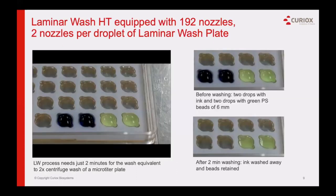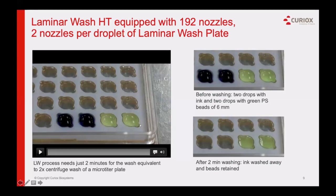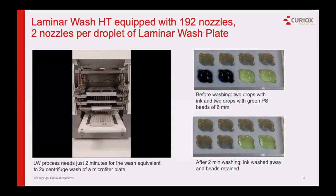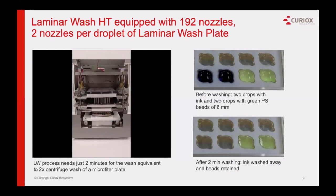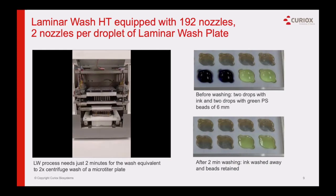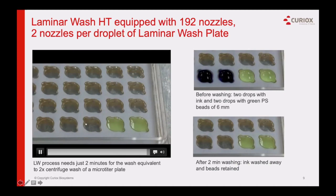In this slide, I'm going to show a short movie clip of how the laminar wash system runs. In the movie, there are two wells with droplets of green fluorescent polystyrene beads, two droplets with food coloring, and all other droplets containing buffer. Once the cells and antibodies are placed in the plate — in this case beads — the user places the plate in the washer and hits start. The plate goes in and the fluidics head, which has 192 nozzles — two per well — comes down. During the two-minute operation, it performs seven cycles of dispensing and aspiration. When the wash is complete, the food coloring is completely gone, while the green fluorescent beads are retained on the plate.